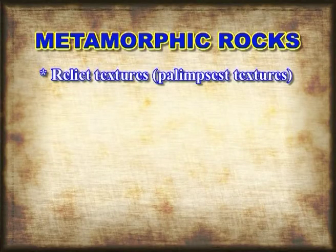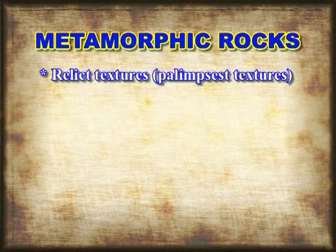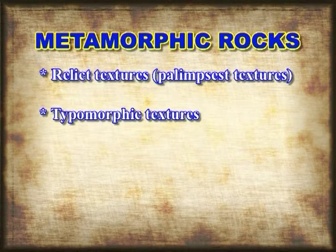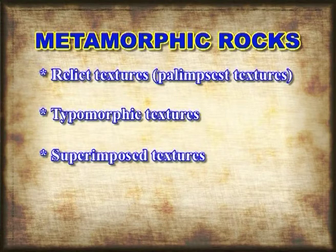Number one: relict texture, also called palimpsest textures. These are textures inherited from the original rock type which have survived metamorphism. Number two: typomorphic textures, which are characteristics of metamorphism. Number three: superimposed textures, which are characteristics of a post-metamorphic event.